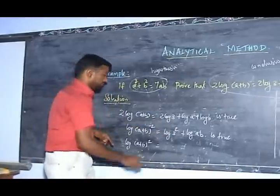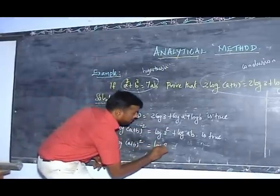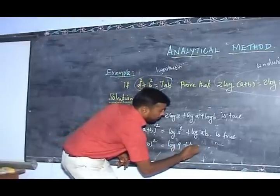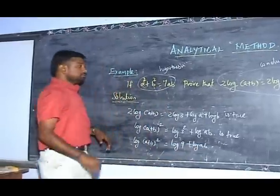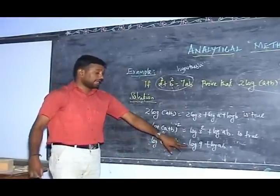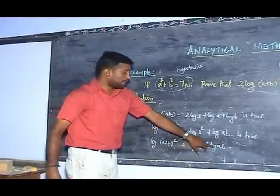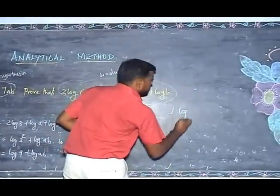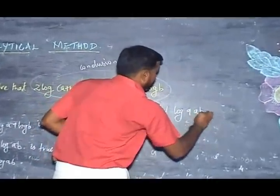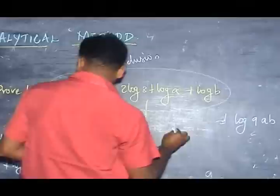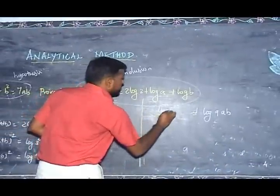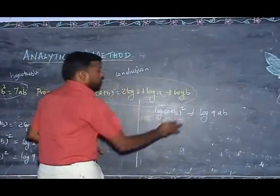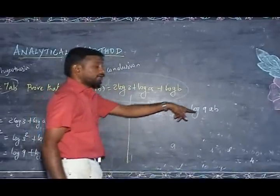Log 3 whole squared is equal to log 9. So log 9 plus log A plus log B can be written as log 9AB. Therefore, on the left-hand side, log(A plus B) whole squared is equal to log 9AB.